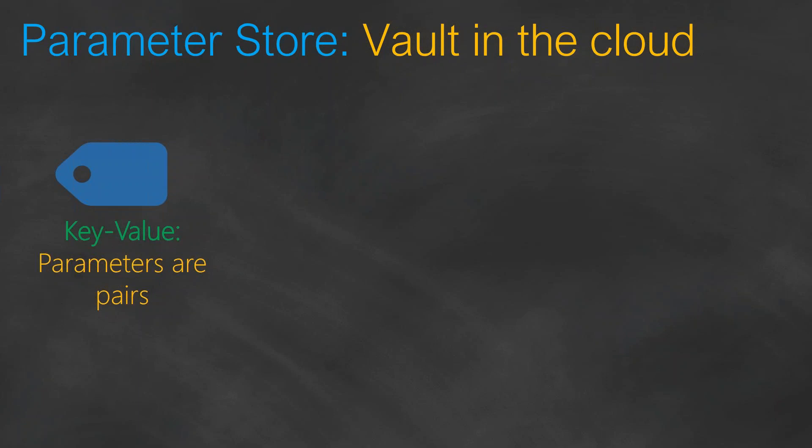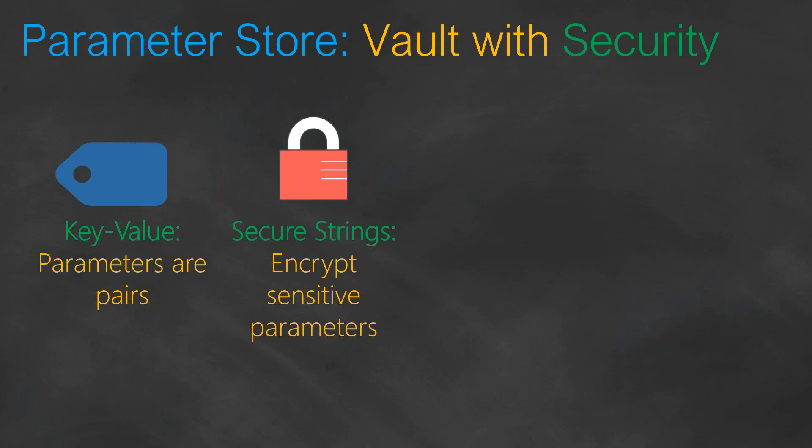How can you secure a parameter? A golden AMI might not need securing, but if you have a database password you want to store and reuse in scripts, you need to ensure it isn't misused. Parameter Store lets you encrypt stored parameters using custom keys or Amazon native KMS keys, so secrets are encrypted and can only be decrypted by people with access to those keys.